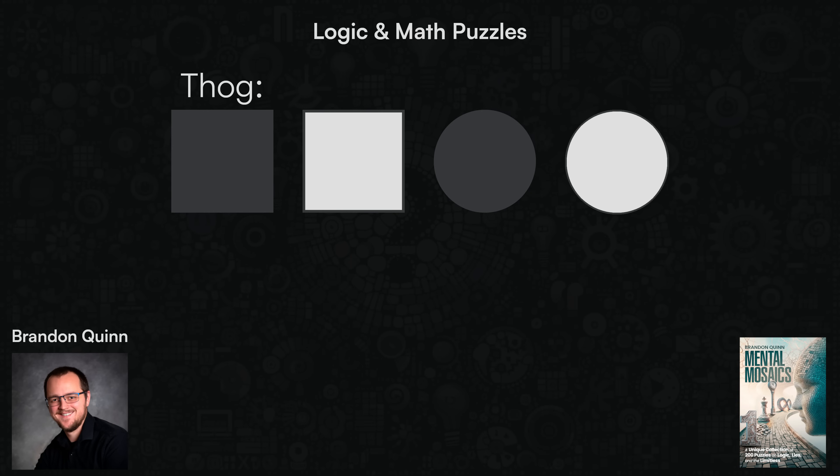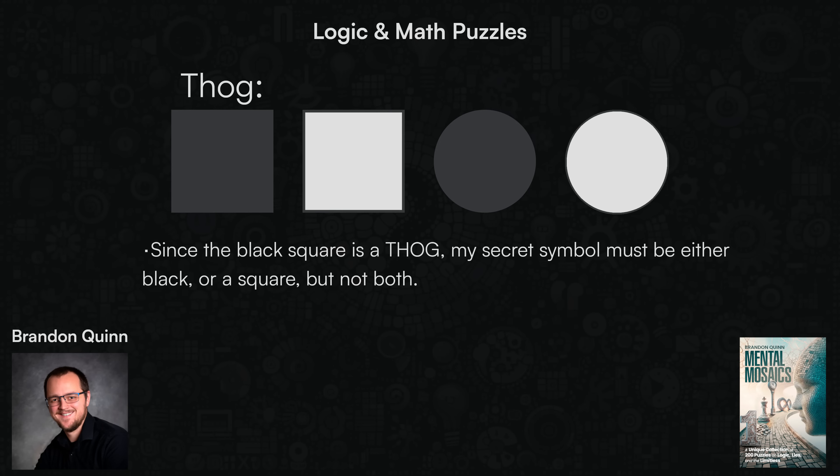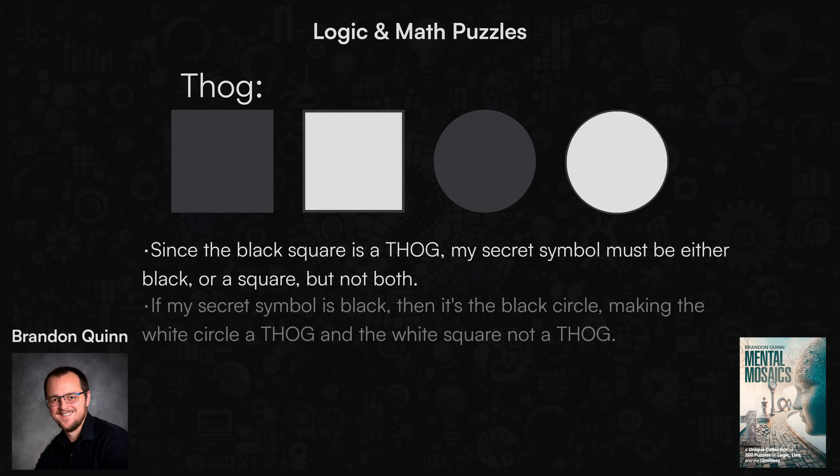The most concrete piece of information of the three is the fact that the black square is a Thog. So what does that tell us? It tells us that my secret symbol must either be black or a square, but not both. Let's list out the possibilities based on that observation. If my secret symbol is black, then it must be the black circle. It can't be the black square because the black square is already the Thog.